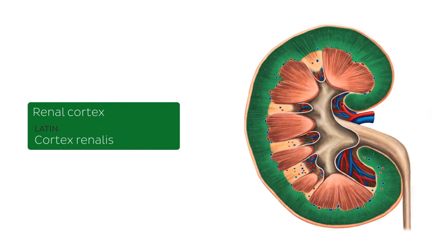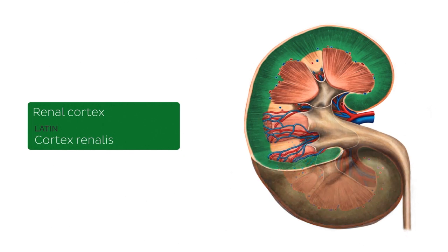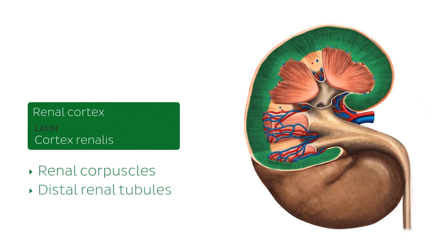Structures found in the renal cortex include the renal corpuscles, the distal renal tubules, and the proximal renal tubules.